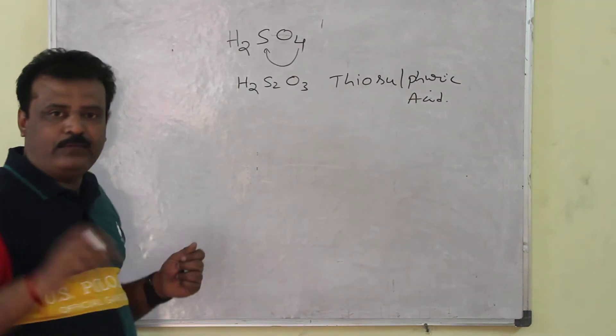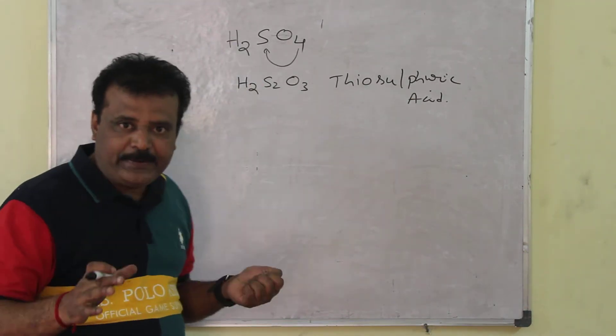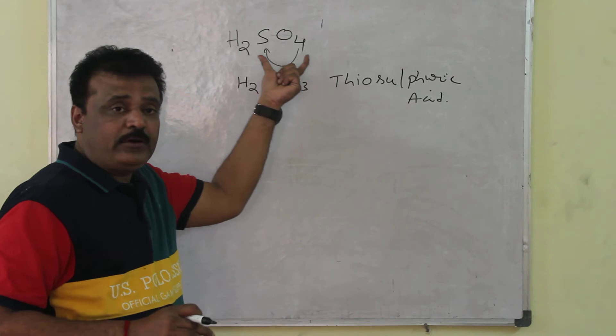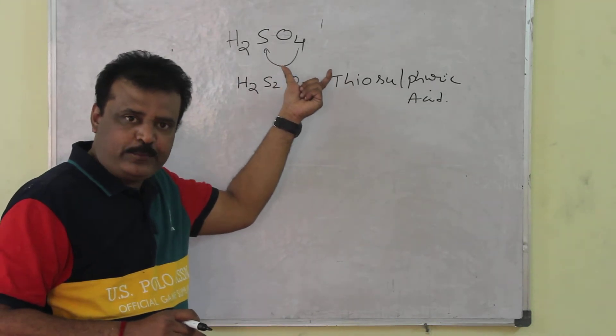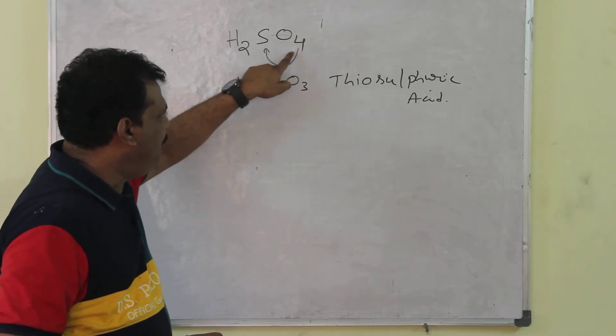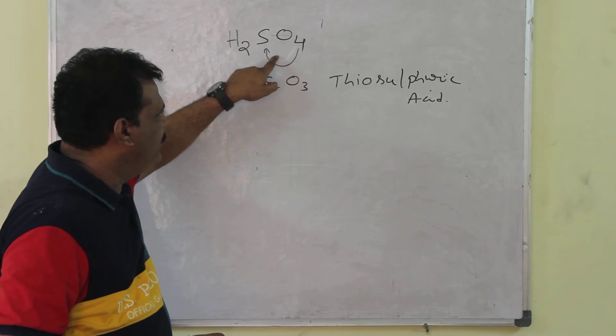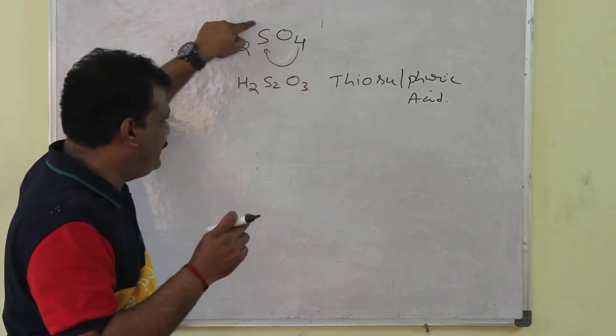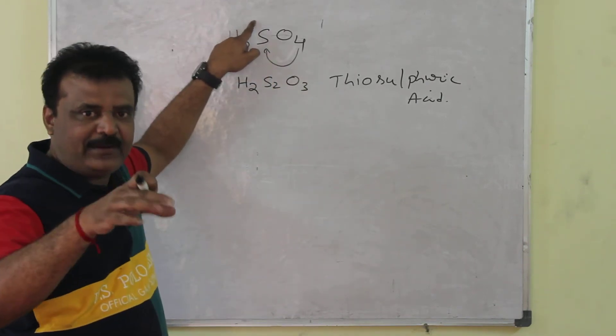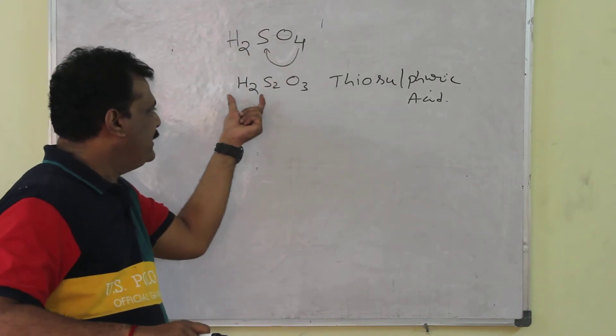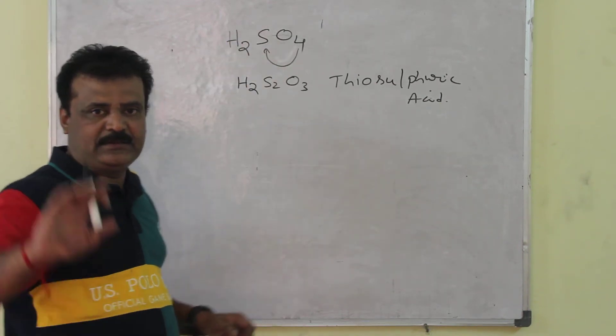We know sulfuric acid. Now, one trick - I repeat, H2SO4: both oxygen and sulfur belong to the same group. This oxygen atom is donated to sulfur. It becomes H2S2O3, thiosulfuric acid.